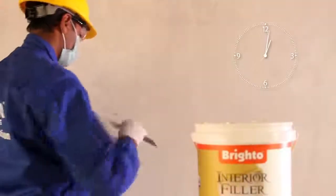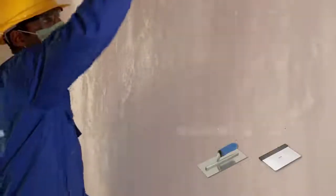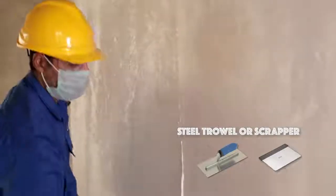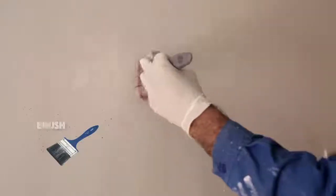apply two to three coats of Brighto Interior Filler with a steel trowel or a scraper. Sand the wall after each coat and dust it off respectively.